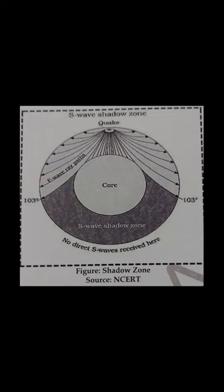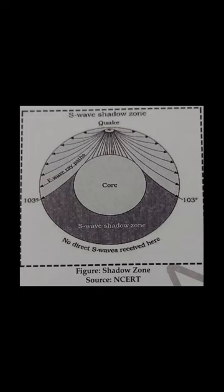Surface waves: the body waves interact with the surface rocks and generate a new set of waves called surface waves. These waves move along the earth's surface and are the last to be logged on a seismograph. Surface waves are considered to be the most destructive waves. Types of surface waves: Rayleigh wave — it is a seismic surface wave causing the ground to shake in an elliptical motion with no transverse or perpendicular motion. It has an up and down rolling motion and is also called surface rolling waves.